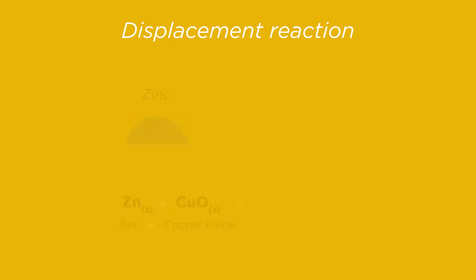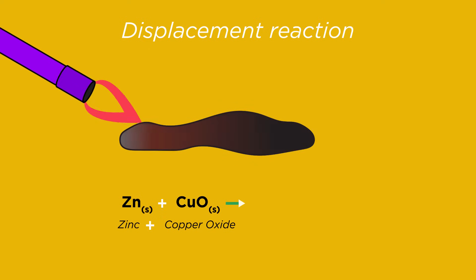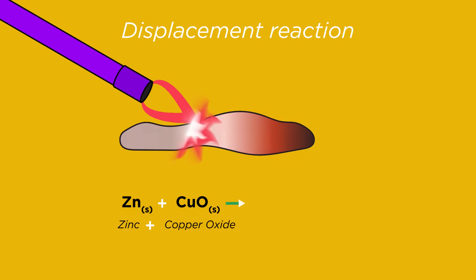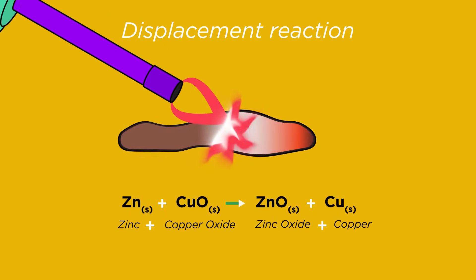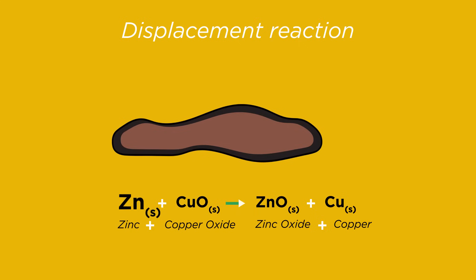For example if a mixture of grey zinc powder and black copper oxide powder are mixed and then heated strongly causing the reaction to start, we see a violent chemical change, lots of heat and light, making red copper powder and white zinc oxide. Zinc plus copper oxide equals zinc oxide plus copper.